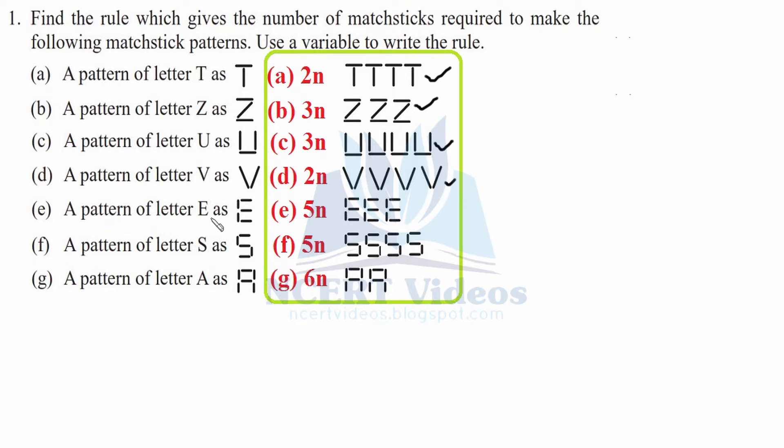Now for the pattern of letter E, we can count them: 1, 2, 3, 4, 5. So if we want to make 3 of them, we will require 5 times 3, which is 15. Counting them gives us 15 matchsticks. Putting in the formula, this is how we make for E.